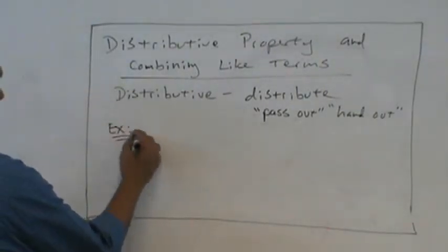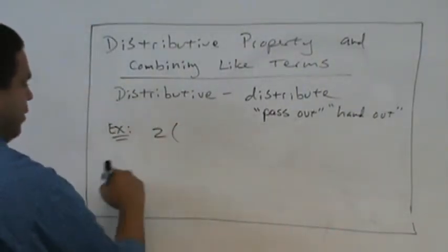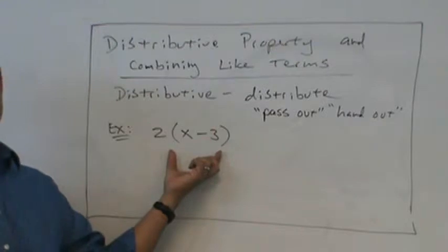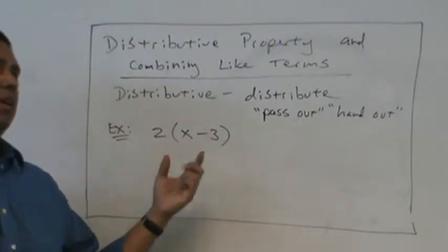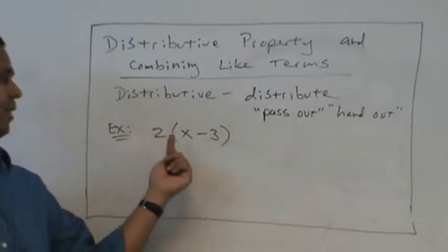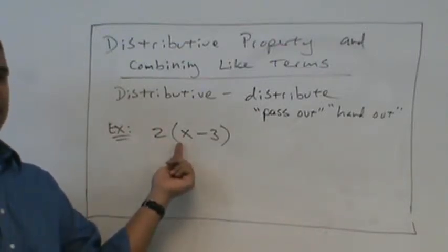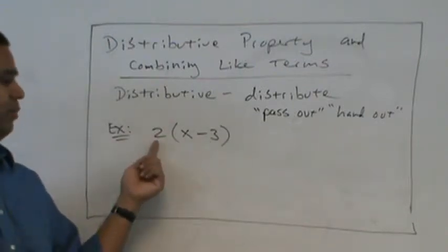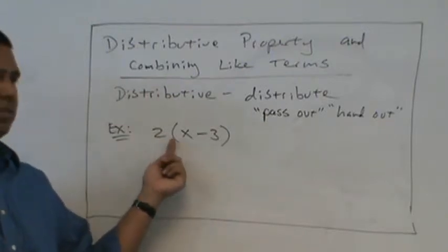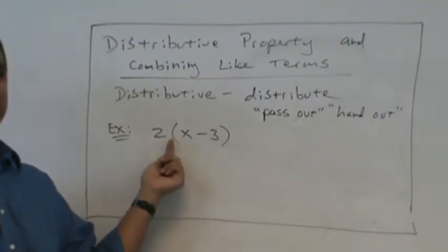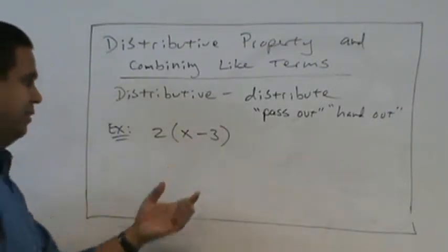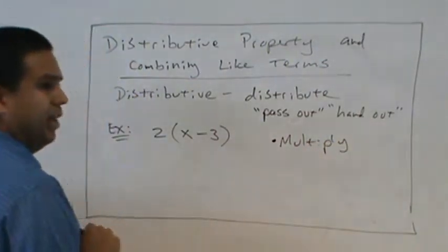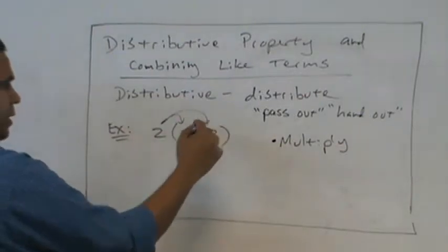So in algebra, the distributive property talks about parentheses. We saw this a little bit with the order of operations. If I see a number out in front of parentheses, then we could distribute that number inside the parentheses. And I told you when we did order of operations, if you see a number right next to parentheses, that means multiply. So this is 2 times x minus 3. So the key is right here. We're going to multiply. But you have to multiply everything in the parentheses.